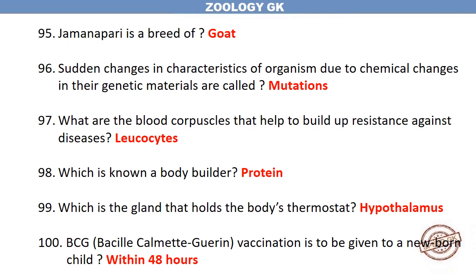Sudden changes in characteristics of an organism due to chemical changes in their genetic material are called mutations. What are the blood corpuscles that help to build up resistance against diseases? Leukocytes. Which is known as the bodybuilder? Protein. Which is the gland that holds the body's thermostat? Hypothalamus.